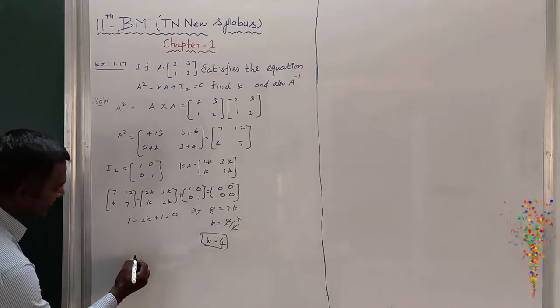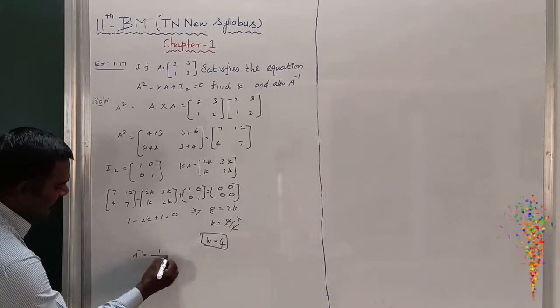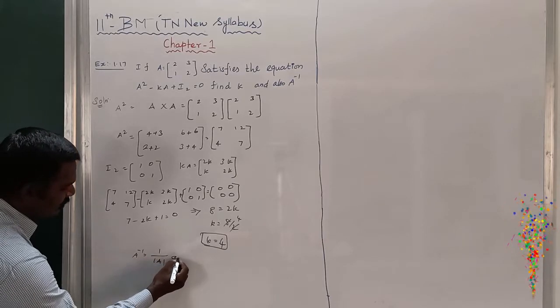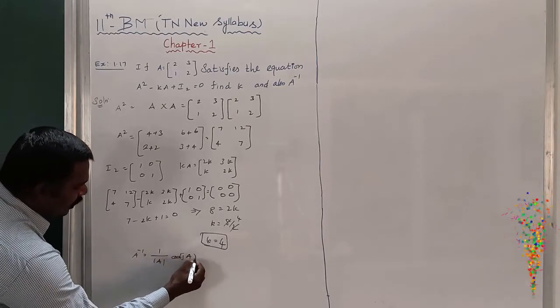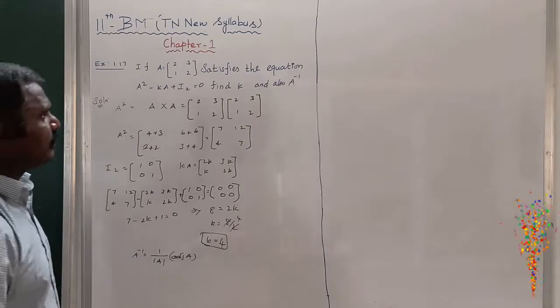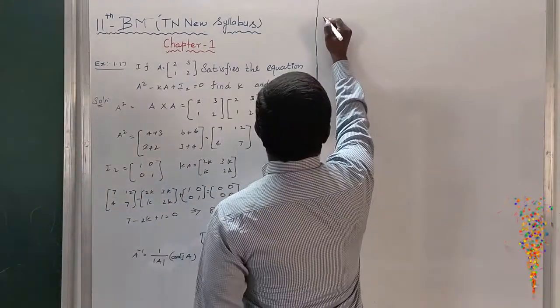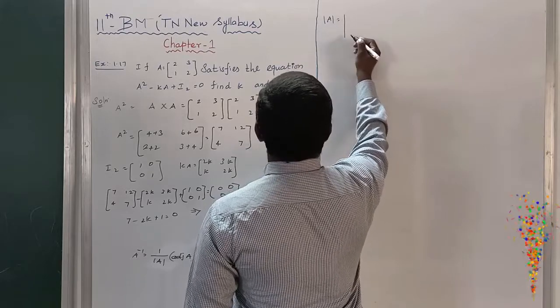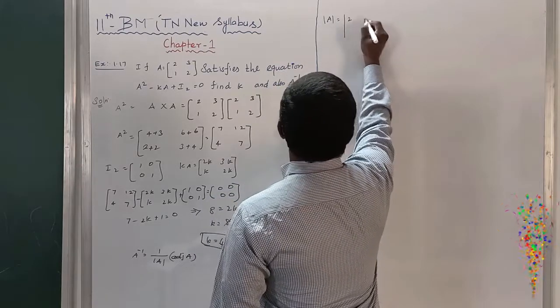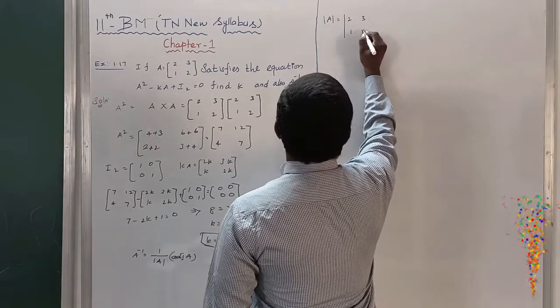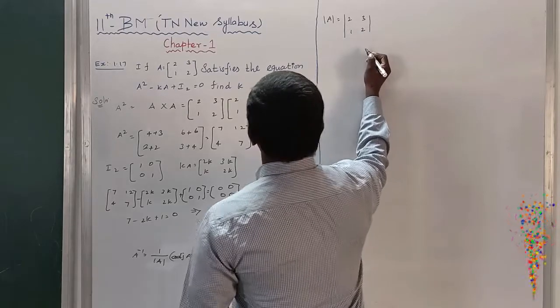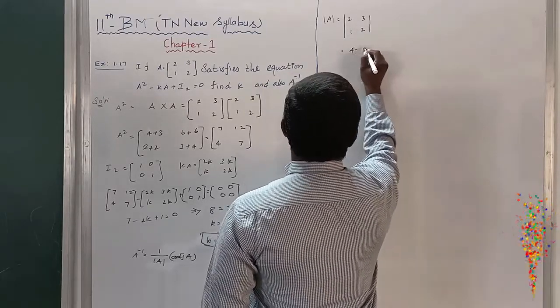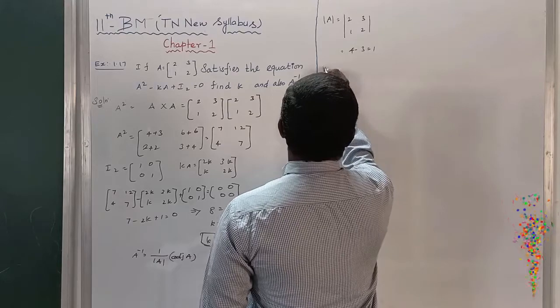Next, we have to find out A inverse. A inverse means 1/|A| into adjoint A. First, I will find out modulus of A. Modulus of A is non-singular means then only A inverse exists. |A| = 2(2) - 3(1) = 4 - 3 = 1.